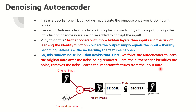What does learning the identity function mean? The output will simply be equal to the input, making it useless because there will be no learning. To avoid this, we can introduce random noise, thus forcing the autoencoder to learn the original data after the removal of the noise. The autoencoder will identify the noise, remove it, and then learn the important features from the input data.